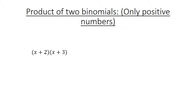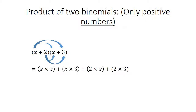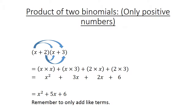Product of two binomials, only positive numbers. We multiply the first with the first in the second bracket, the first with the last, the last with the first, and the last with the last. x times x plus x times 3 plus 2 times x plus 2 times 3 equals x squared plus 3x plus 2x plus 6, which equals x squared plus 5x plus 6. Remember to only add like terms.